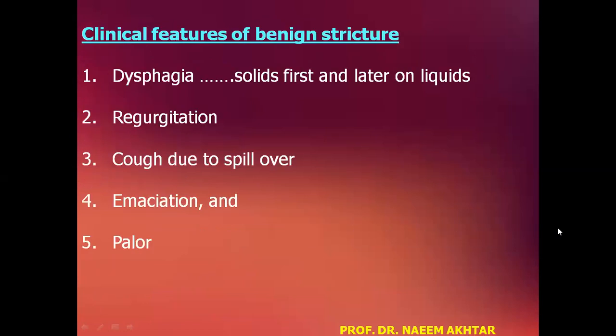Clinical features of benign stricture: the clinical features are dysphagia — first to solids and later on liquids may have difficulty to pass through the esophageal stricture — then regurgitation, cough due to spillover. The patient may have emaciation and failure.